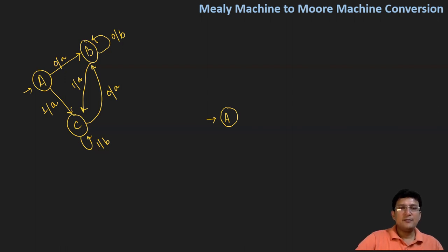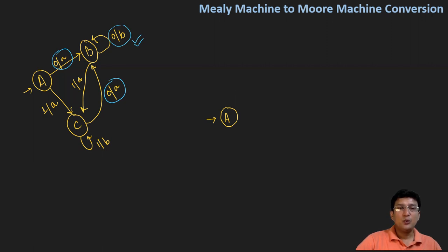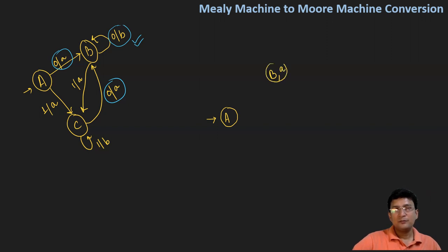Now let us analyze state B. There are a few transitions which are actually giving us A as the output, so I can think of associating A with state B. But there is one transition which is giving us the output B. So we cannot have two outputs at the same state. In that case, we will have to make two different states. So we draw a state B and associate output A with it, and another state B dash and associate output B with it.